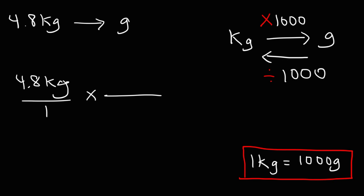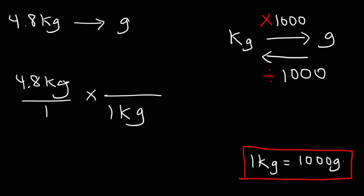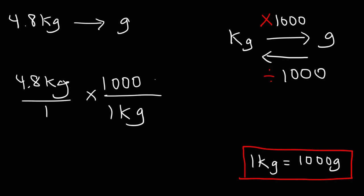In the next fraction, we need to use our conversion factor. We want to set it up in such a way that the unit kilograms cancels, leaving behind the unit grams. Notice that we have the unit kilograms on the top part of the first fraction. We want to put that same unit on the bottom, so I'm going to write 1 kilogram on the bottom and 1,000 grams on the top. By setting it up this way, the unit kilograms will cancel, leaving behind the unit grams.